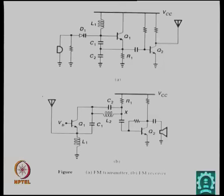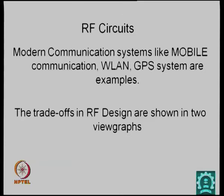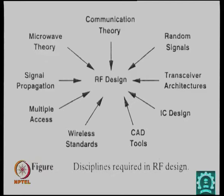To give context, there is a bipolar RF FM transmitter and receiver circuit, though this course may not cover it in detail. Modern communication systems like mobile, LANs, and GPS involve trade-offs between design and other parts. For digital design, three criteria are optimized: low power, high speed with minimum delay, and small area — the classic area-power-speed triangle.